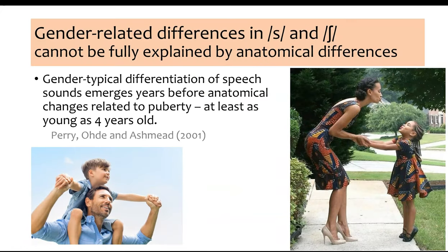A really interesting study done in 2001 by Perry and colleagues found that differences in voice pitch started to emerge well before puberty — before any anatomical differentiation between boys' and girls' vocal tracts. Even children as young as four years old started to map their vocal patterns more like their corresponding gender counterparts in adults: girls started patterning like women and boys started patterning like men.